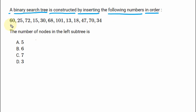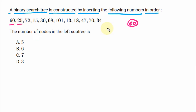First we are constructing the binary search tree. The first number is 60. Whoever is the first number will be the root of the tree, so 60 is the root node. Then we have 25, which is less than 60, so 25 comes on the left hand side. Next value is 72. 72 is greater than 60, so it comes on the right hand side of 60 as the right child.